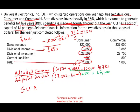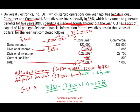Now we can compute EVA for the consumer division: adjusted income of $4,750 minus ($27,400 × 11% WACC) = $4,750 − $3,014 = $1,736. That is the Economic Value Added — adjusted income minus adjusted invested assets multiplied by WACC.